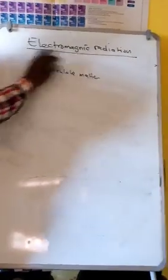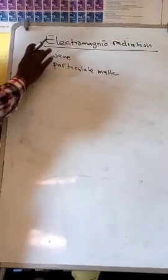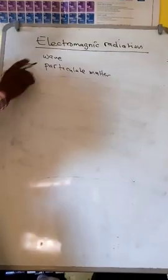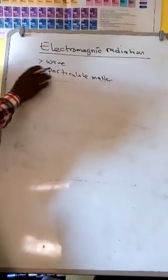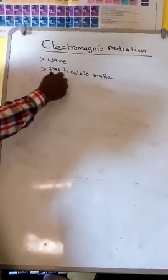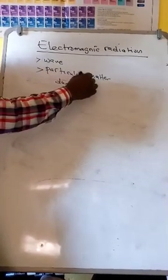This phenomenon is now referred to as the dual nature of light. Light can both behave as a wave and as a stream of photons.